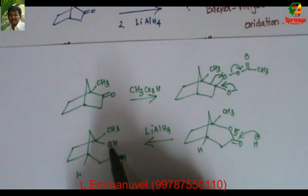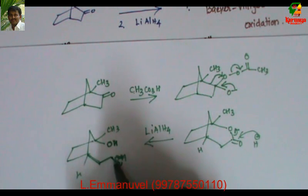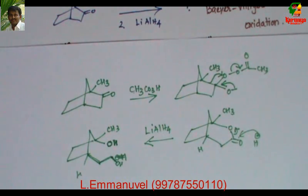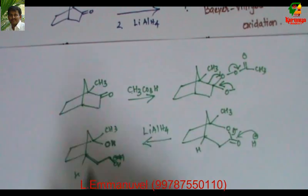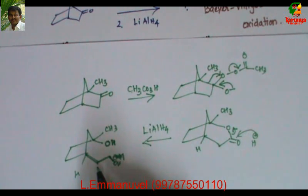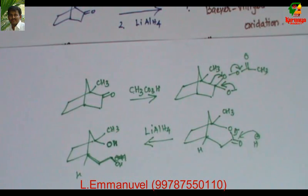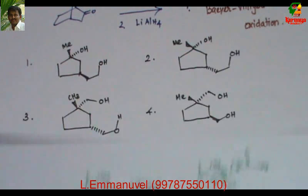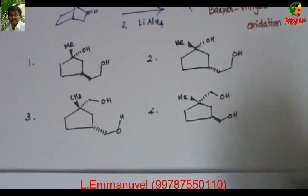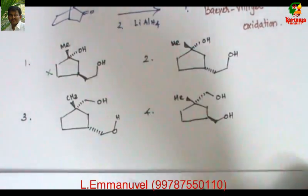Now look at the product: the OH on the ring and the CH2CH2OH side chain should be in the same direction — they are cis to each other. In the first option, the OH and CH2CH2OH are trans to each other, so this cannot be the product. In the second option, the OH and CH2CH2OH are cis to each other, so this is a possibility.